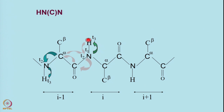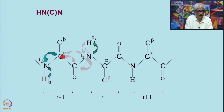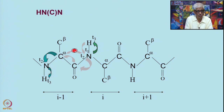The pathway of magnetization transfer is indicated here. Starting from the amide proton of residue I, you go to the nitrogen-15 of residue I, and then from here you go to the carbonyl of residue I minus 1. This is the NH-Cα-CO of residue I and the NH-Cα-CO of residue I minus 1. So from the nitrogen of residue I, you go to the carbonyl of I minus 1, and then from the carbonyl you transfer to the C alpha of residue I minus 1.